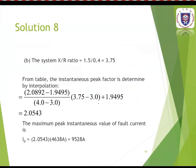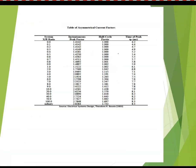To identify the instantaneous peak factor, first calculate the X/R ratio: X divided by R gives 3.75. The instantaneous peak factor is found using the asymmetrical current factor table. Since X/R = 3.75, look in the range between 3 and 4 in the table.